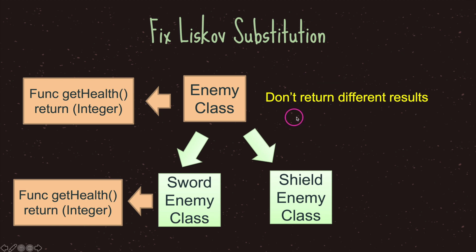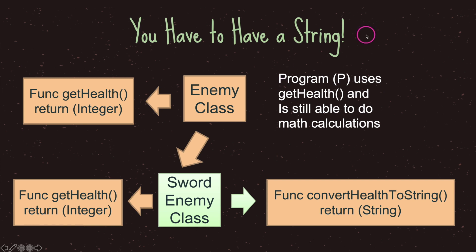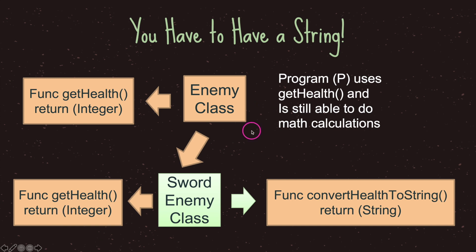The solution is simple — just don't return different results. Look at our sword enemy class again: we have get_health and instead of returning a string we now return an integer. Now let's say you really need a string for some reason. Instead of overriding the base class's return data type, what you do is create a new function, and then you can use that function to return your intended data type.